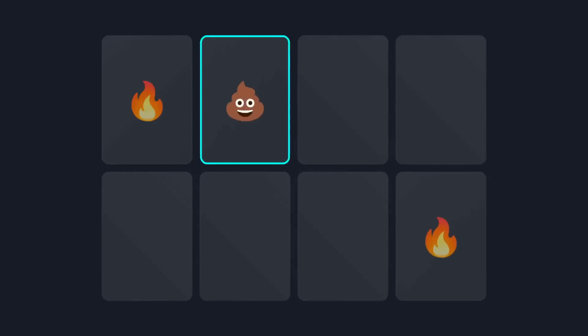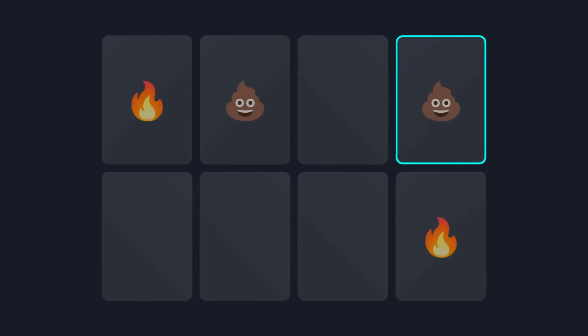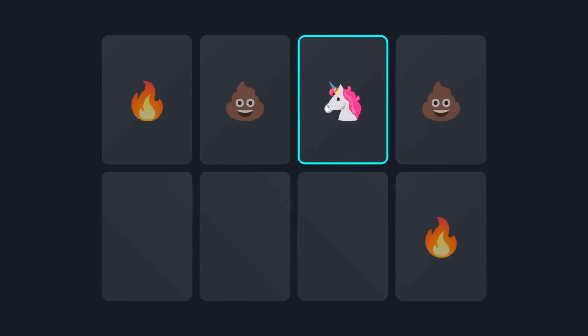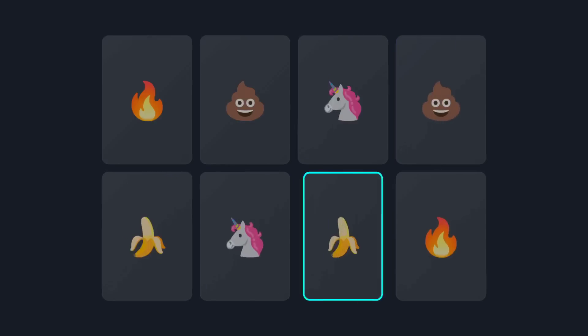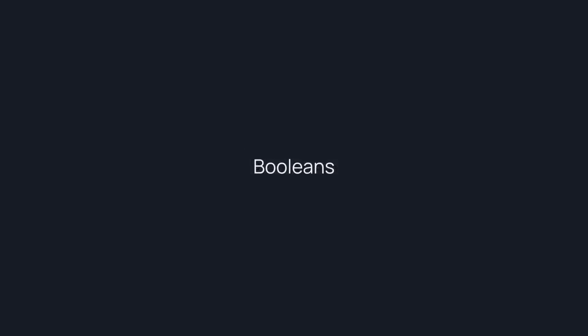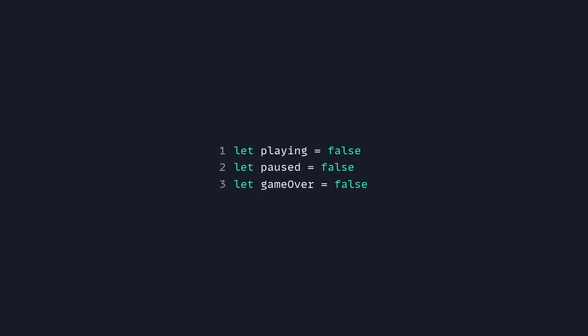It might look simple at first, but there's a lot of hidden complexity behind it. But you probably have something more complicated, like a checkout or a multi-step form. Let's talk about the first thing everyone does — they use booleans. So you can express your state using booleans.